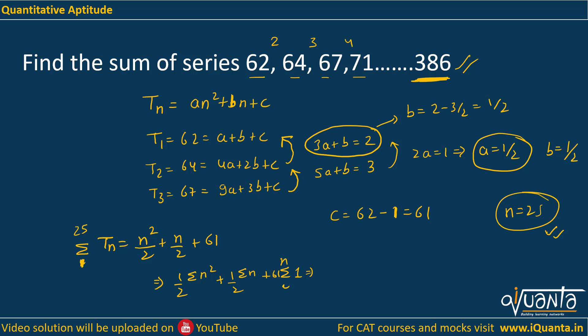Sigma N square means sum of squares of first N natural numbers, that is N(N plus 1)(2N plus 1) by 6. We have extra half, so we will multiply it. Then sigma N, that means sum of first N natural numbers, this will be N(N plus 1) by 4. Then 61 into N because we are adding 1, N times. Now put N equal to 25.